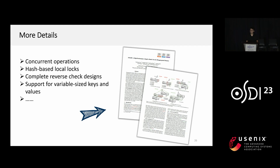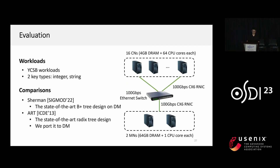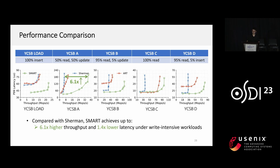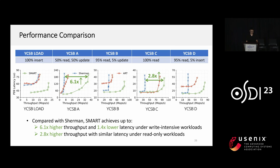Due to time limits, please refer to our paper for more design details. We evaluate SMART under the YCSB workload with both integer and string key types, using a Cloudlab cluster with 16 compute nodes and 2 memory nodes. We compare SMART with Sherman, the state-of-the-art B+ tree on DM, and ART, the state-of-the-art radix tree ported to DM. These figures show the throughput-latency curves under different YCSB workloads for integer keys. Compared with Sherman, SMART achieves up to 6.1× higher throughput and 1.4× lower latency under write-intensive workloads, and up to 2.8× higher throughput under the read-only workload.